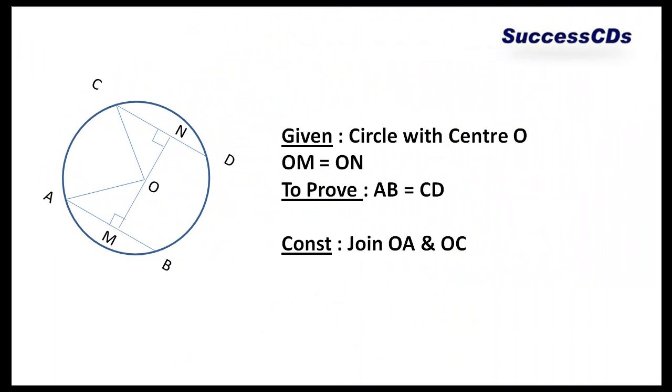Here we are given that a circle with center O and equidistant from the center, that means OM is equal to ON. OM will be perpendicular to AB and ON will be perpendicular to CD because these are the shortest distances from a point on a line. Now we have to prove AB and CD are equal. What we do, we join OA and OC in construction.